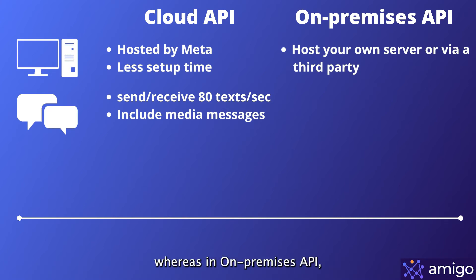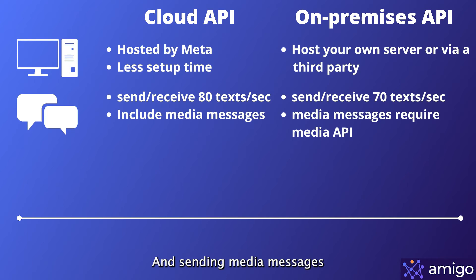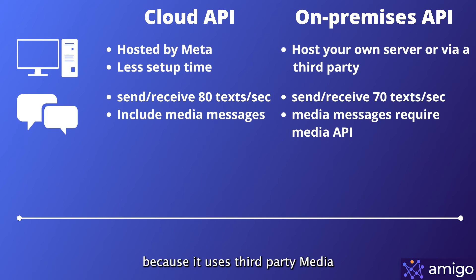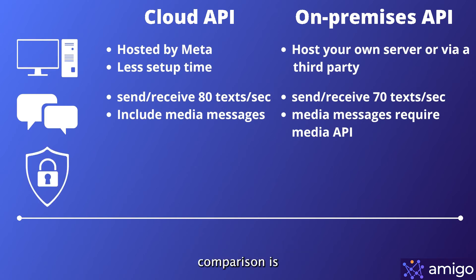In On-Premises API, you can send up to 70 messages per second, and sending media messages may reduce this number because it uses third-party media API providers to do the job.